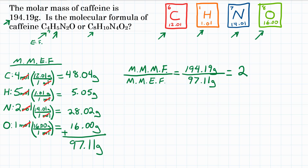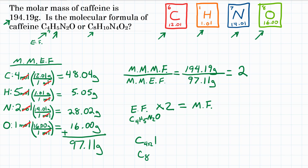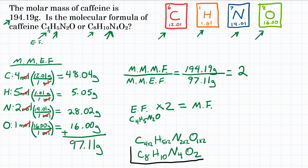It's not always exact, but right about 2. So that means our empirical formula C4H5N2O times 2 is going to be our actual molecular formula — the formula of caffeine. Multiplying through by 2 gives us C8H10N4O2, which was the only other option we had. So our final answer: the molecular formula for caffeine is C8H10N4O2.